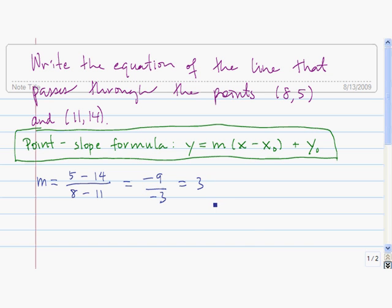Okay, so the slope of the line that we're looking for is equal to 3. The next thing that we need to do is we need to choose which of the two given points we want to use in order to find the equation of the line.